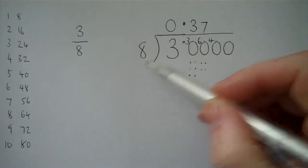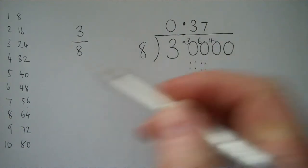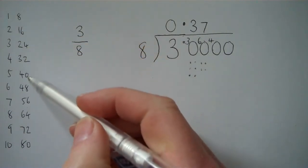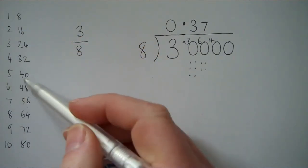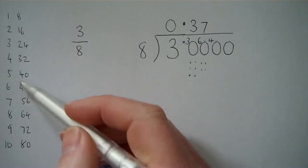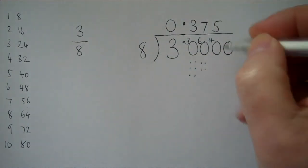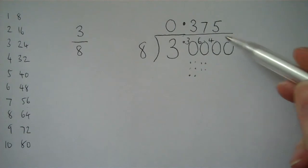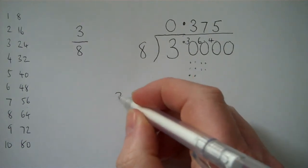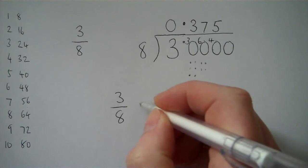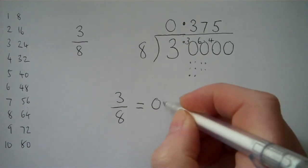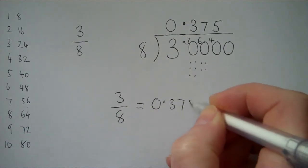How many eights are there in 40? Well look, it's an exact number. 5 eights are exactly 40, so we know the answer is 5. And because there's no remainder we can stop working things out there, we don't need any more zeros. So there we are, we've done it. 3 eighths equals 0.375.